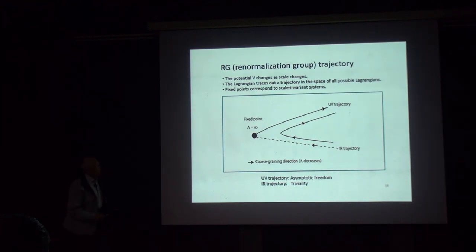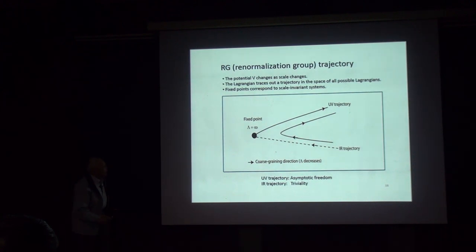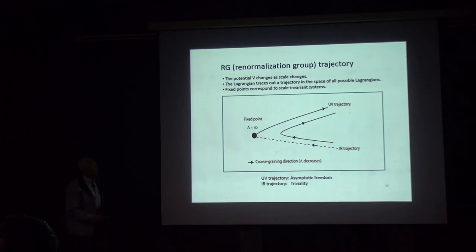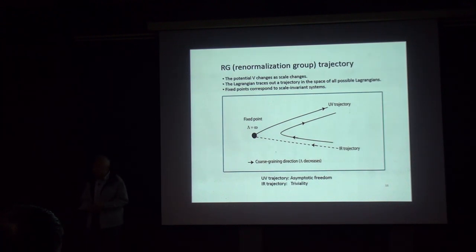These trajectories show how a system evolves as the scale changes: the appearance of the system changes as you move from point to point in the space of Lagrangians, but the basic identity is the same. A trajectory going toward longer and longer length scales is called the ultraviolet trajectory. There are also fixed points at which the system does not change under scale transformation.